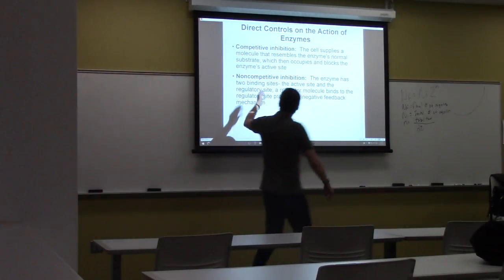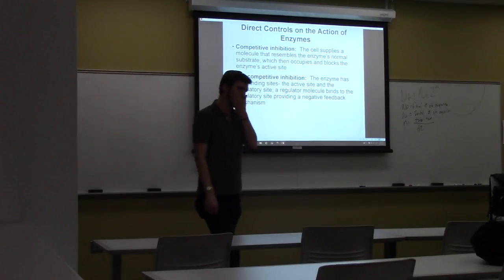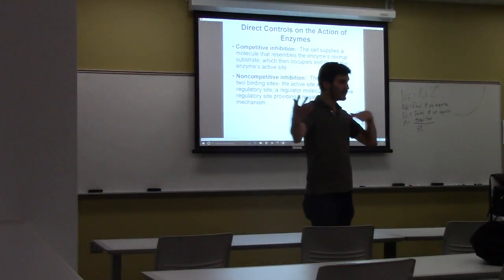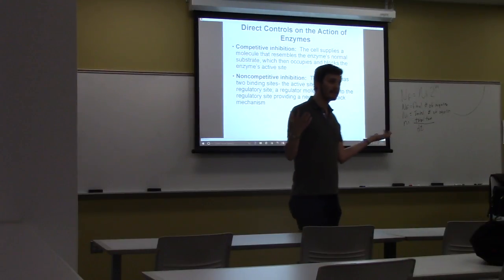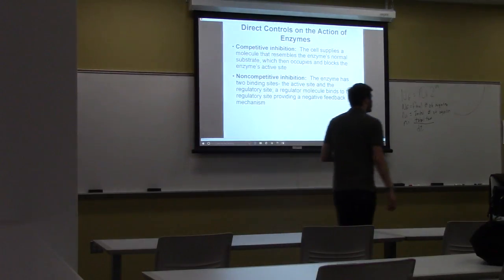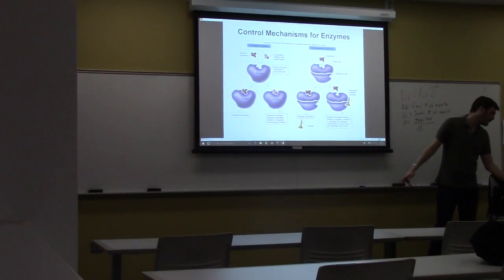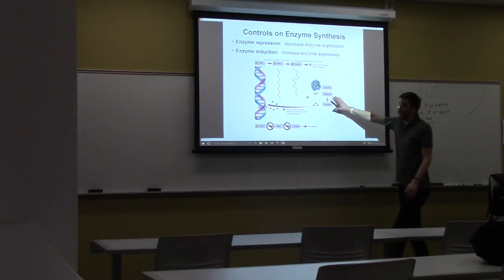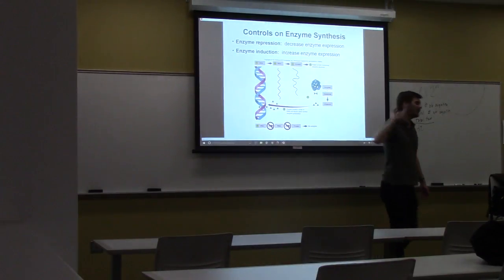What about non-competitive inhibition? Changes the shape. Yep. Molecule binds somewhere else, not the active site. Changes the shape. And now the enzyme doesn't function. And remember, these are short-term fixes. If you want a long-term fix, then you have to go to the DNA. Turn the DNA off, then the RNA, the protein, cannot be made.